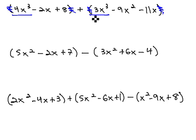4x³ and 3x³ can be combined to give us 7x³. We also have a negative 9x² with no like terms, so we'll just write negative 9x².